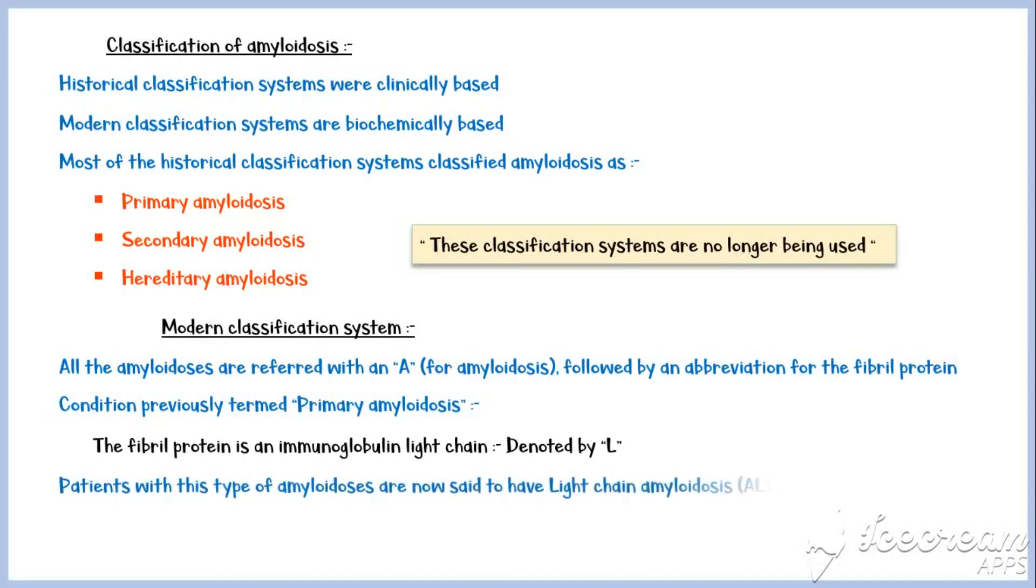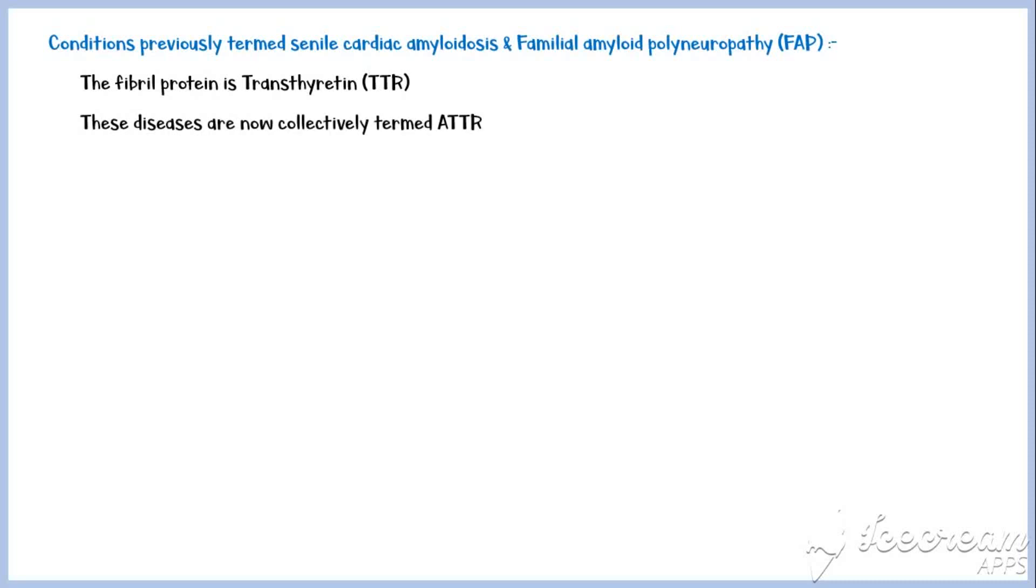So, patients with this type of amyloids are now said to have light chain amyloidosis, or AL. Similarly, in the conditions previously termed senile cardiac amyloidosis, and familial amyloid polyneuropathy, the fibril protein is a transthyretin. So, these diseases are now collectively termed ATTR.